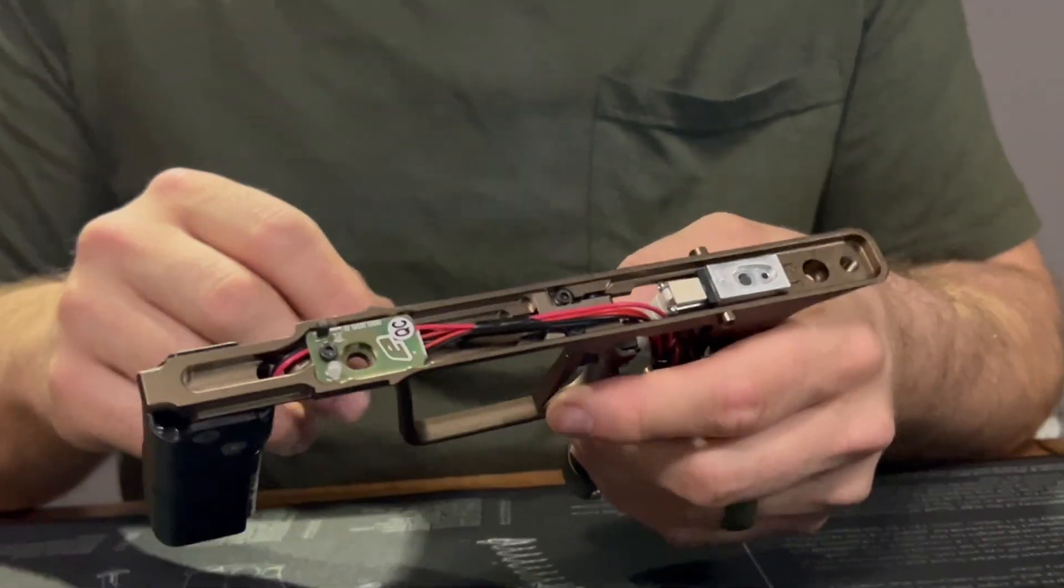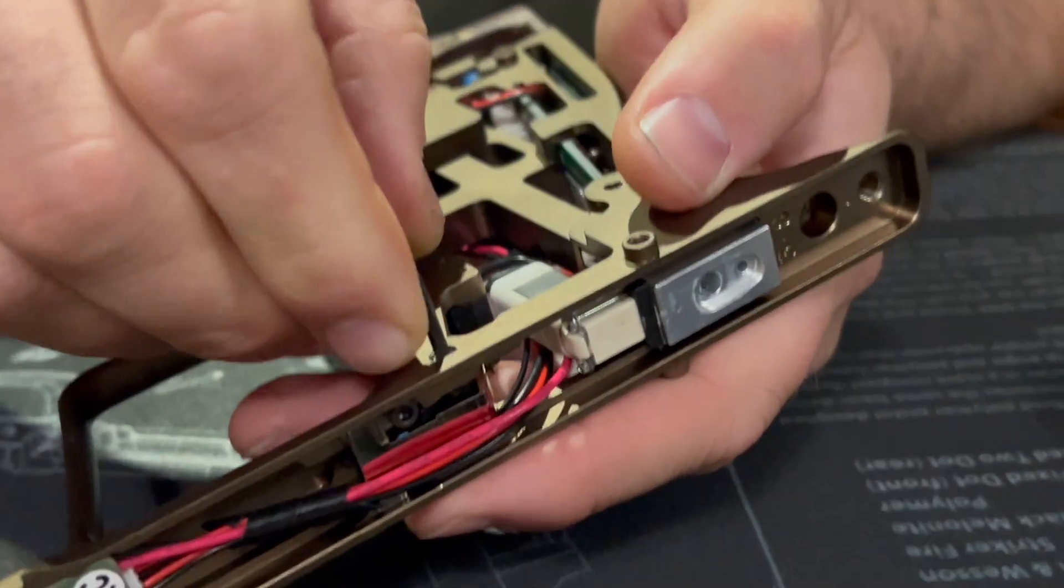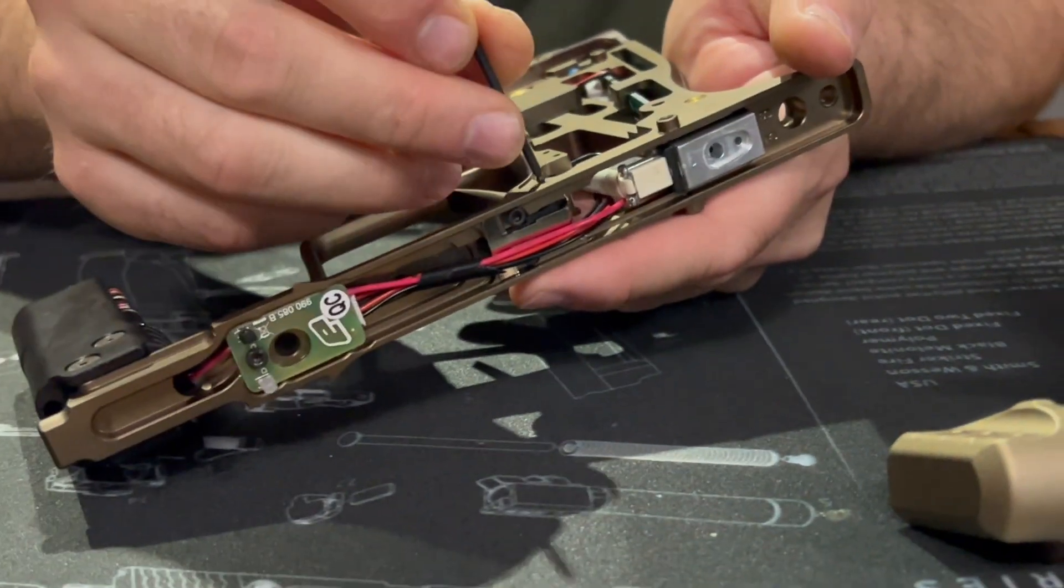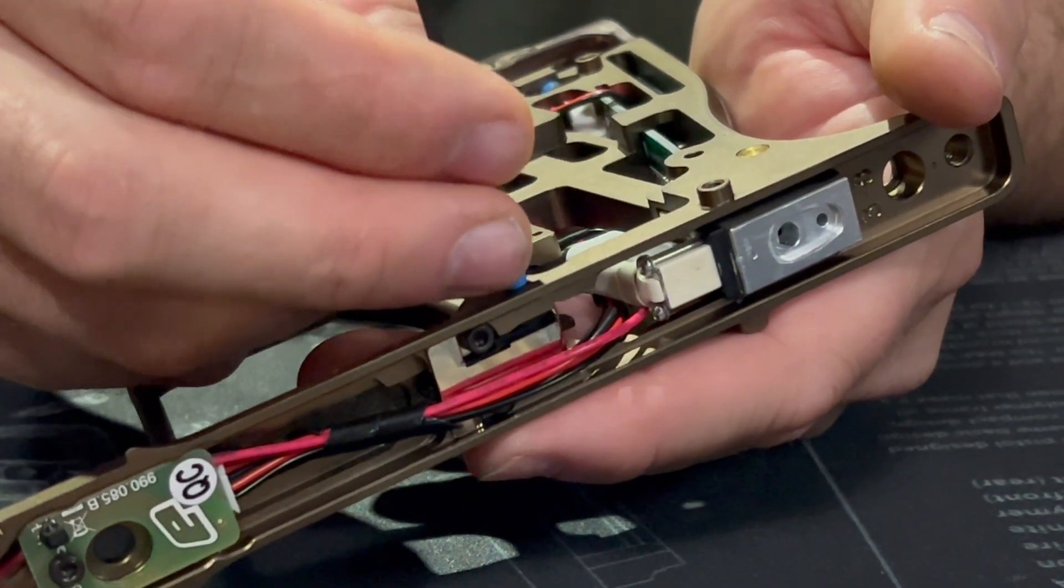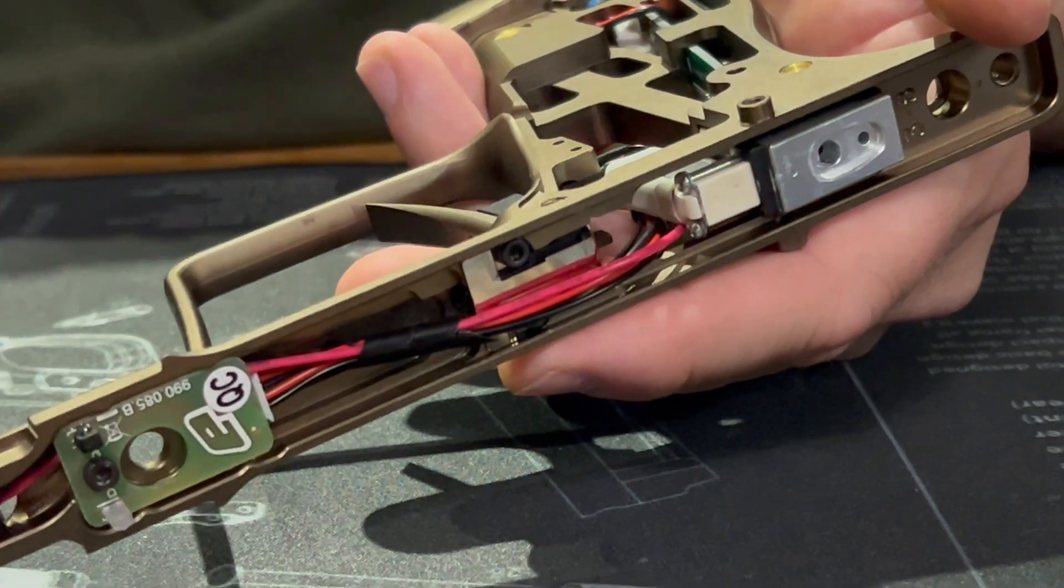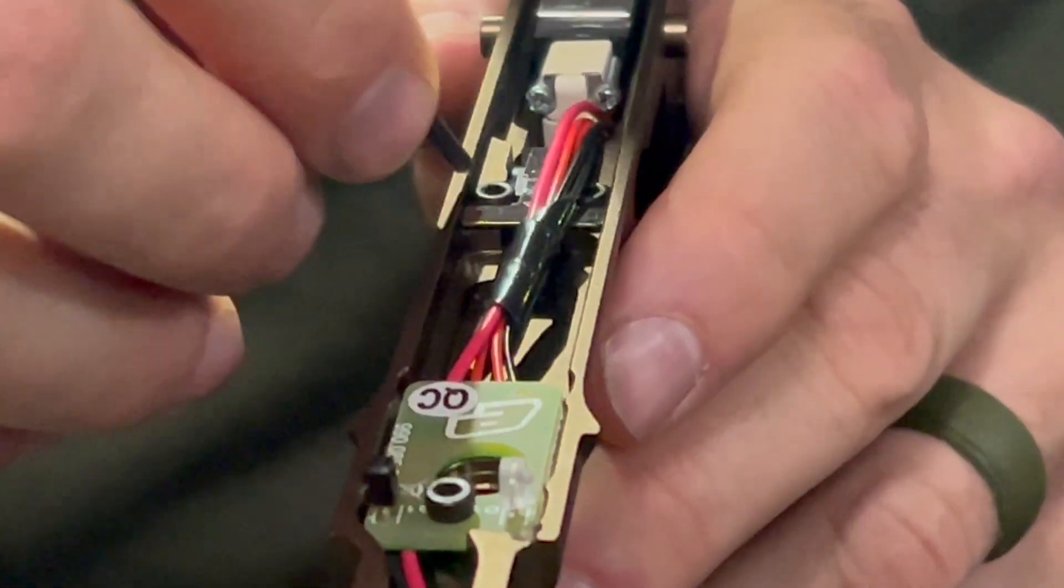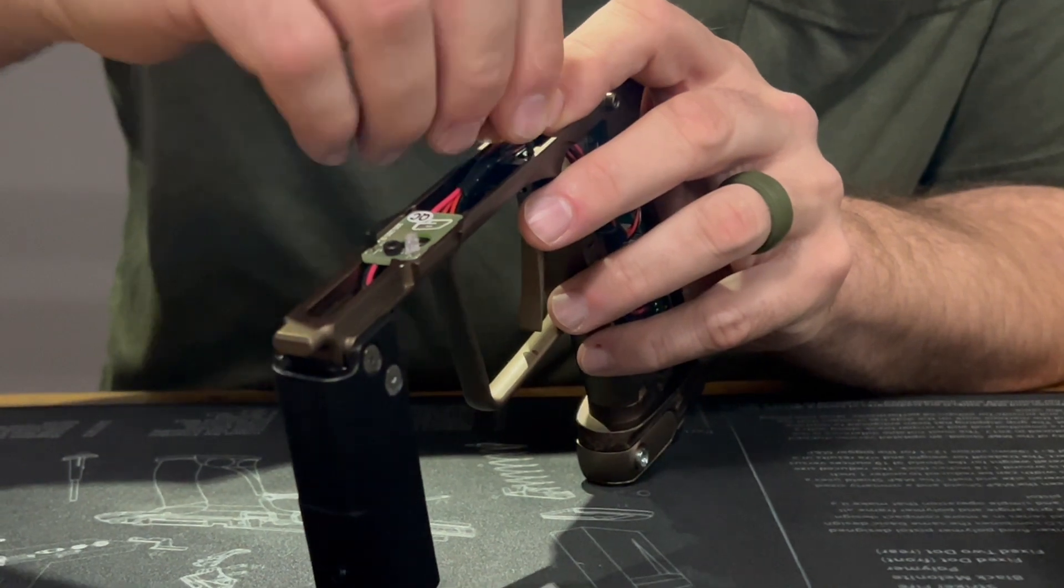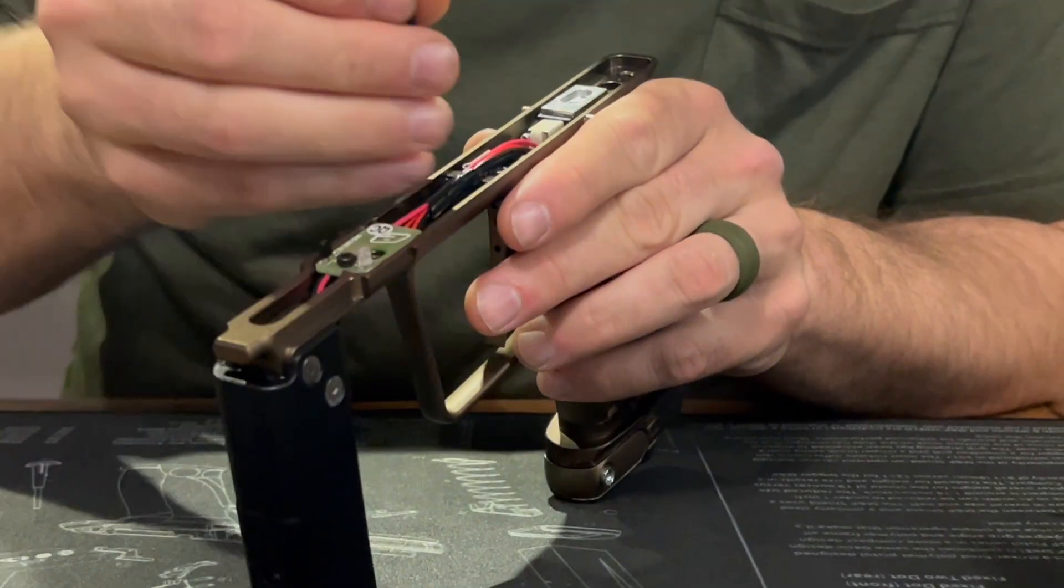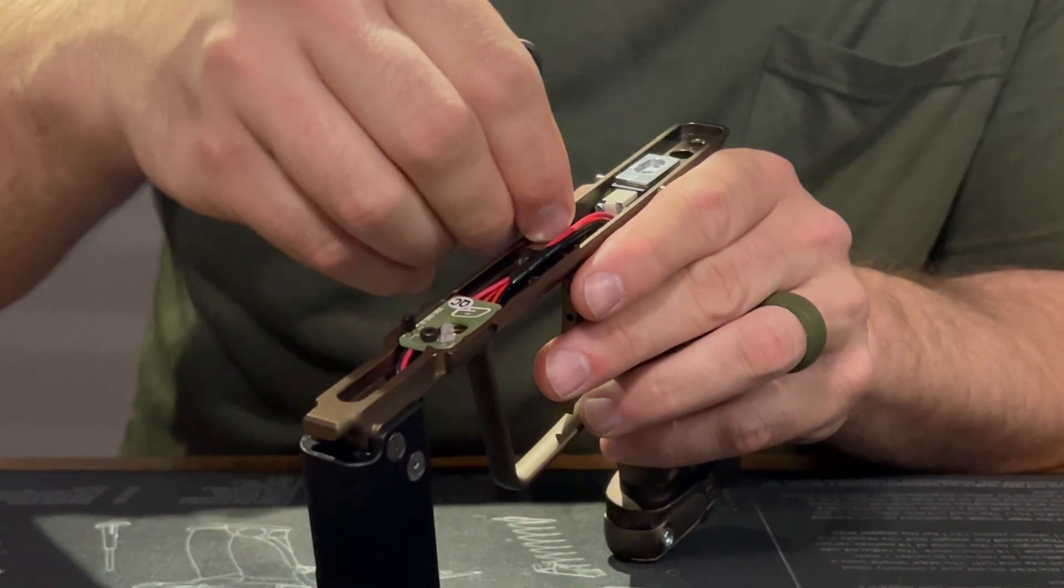Now what you're going to want to do is pull out this little screw here for the trigger. This is just your trigger pin, so you want to pull that out. And then up top here, there's two screws you have to remove.